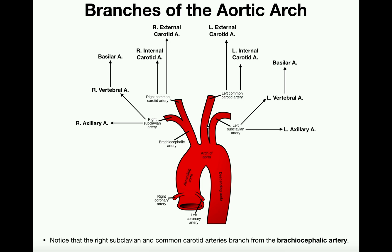The middle branch off the aortic arch is the left common carotid artery. It's called 'common carotid' because it eventually divides into the left external carotid artery and the left internal carotid artery. The internal carotid runs deeper inside the body, while the external carotid is more superficial.